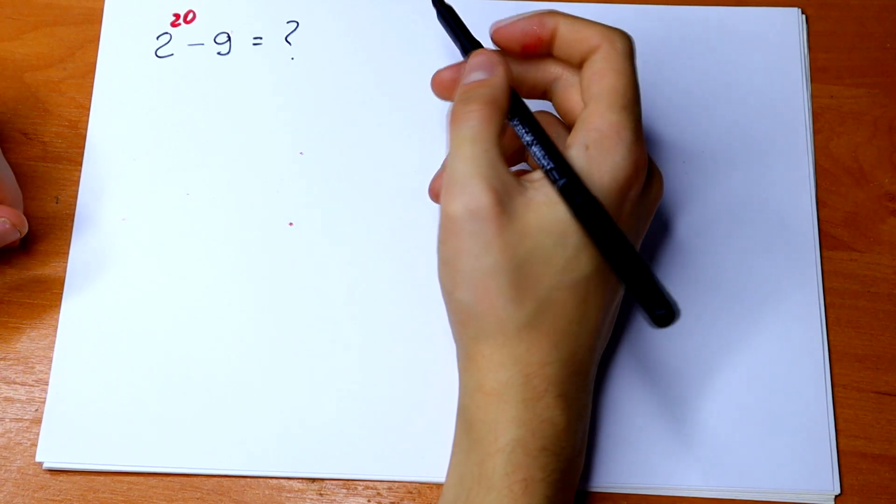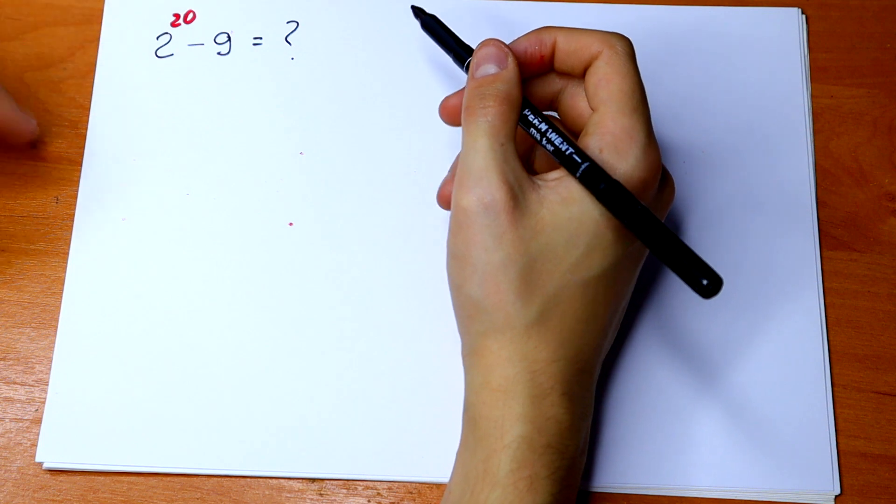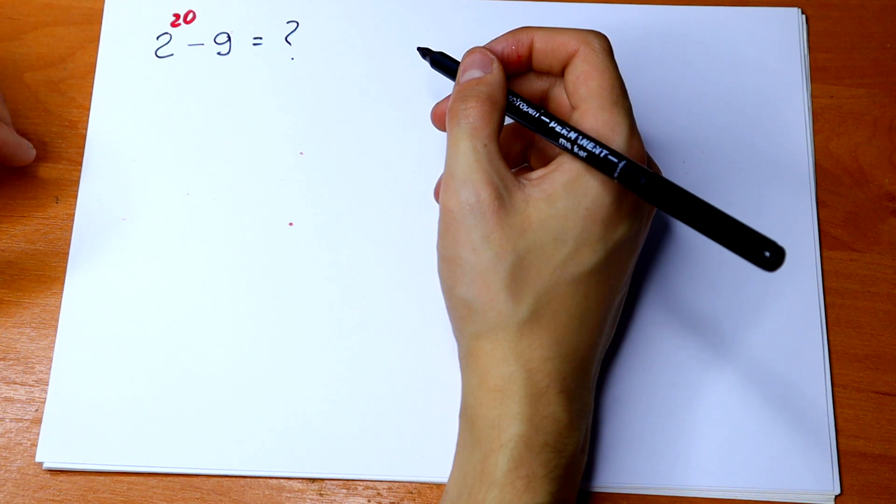Hello everyone, welcome back to MathMood. Here we have an interesting algebra question: 2 to the 20th power minus 9. We should simplify and solve this, so let's start.